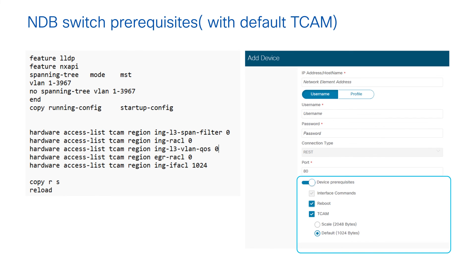TCAM is an important resource for implementing ACLs, which is key for tap aggregation to work on Nexus 9K. By default the ingress ACL region is set to 1024 entries. To achieve 1024 entries in default mode, some ingress regions that are not needed for NDB are zeroed out. When adding a device, there is a zero-touch provisioning feature — toggling the device prerequisite option lets you choose to reboot the switch for TCAM and scale settings, bringing the essential TCAM resources needed for tap aggregation to work on the NDB box. Thanks a lot for your time.